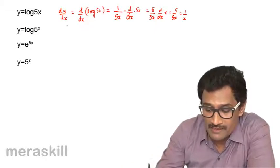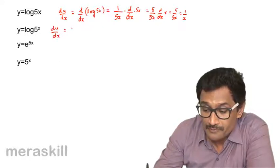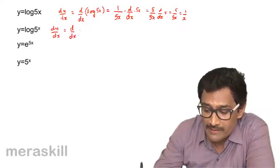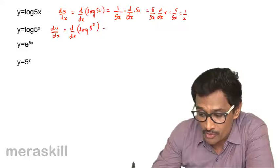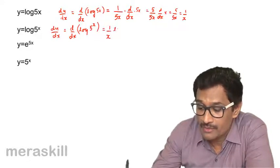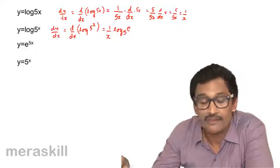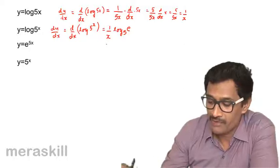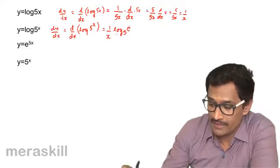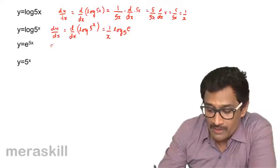This case is different: dy/dx of log(5^x). Recall that d/dx of log_a(x) = 1/(x · log_e(a)), so this gives 1/(x · log_e(5)) — that is, log e to the base 5. There is no composite function involved here.